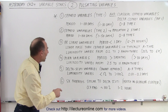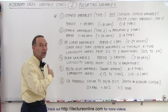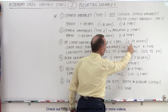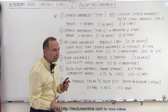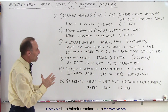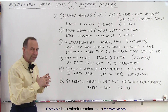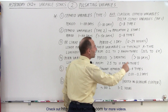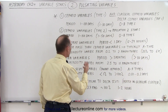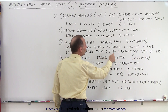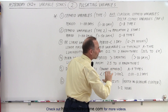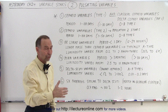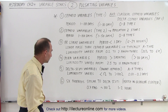Then we have the RR Lyrae variables, which are probably the most common type of variables that we know of. They have a period of less than a day — from about 12 to 24 hours. Their periodicity doesn't really equate to their sizes; they're all about the same type of star, typically A-type stars. The change in magnitude ranges anywhere from 0.2 to 2 magnitudes — so from about a 20% change to a sixfold change in their brightness.